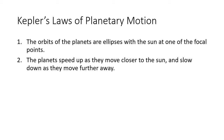Kepler's second law says the planets speed up as they fall closer to the Sun and they slow down as they move further away. We already know that on a local scale: if you drop a ball, as gravity pulls it down it gets faster; if you throw it up against the force of gravity, it slows down. The planets are doing the same thing as they move closer to and further away from the Sun.